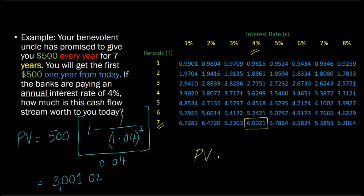The present value of a $500 annuity that lasts for the same number of years and given the same interest rate is just $500 times 6.0021. You can confirm that this too will come out to $3,001.02.